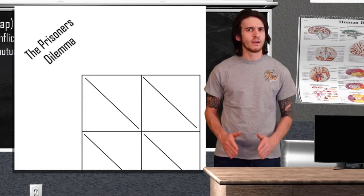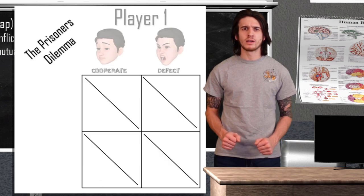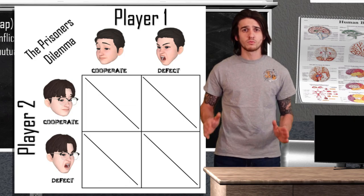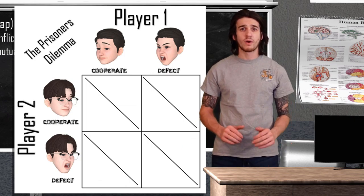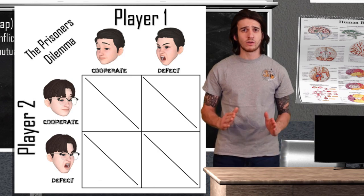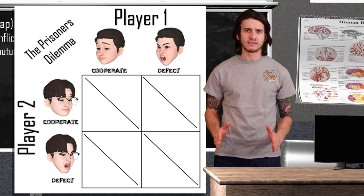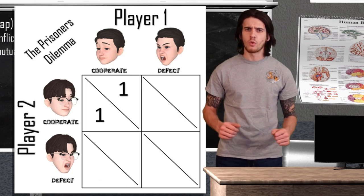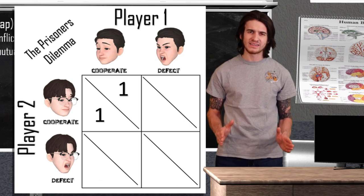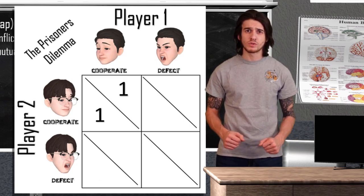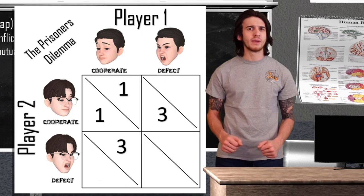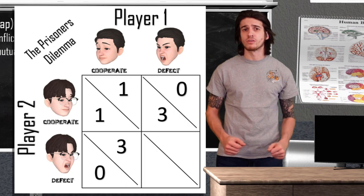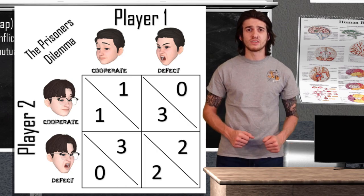In our scenario we have two main characters: criminal one, who we will call Michael, and criminal two, who we will call Dwight. Both Michael and Dwight have two choices, leaving us with the social trap game matrix you see before you. If Michael and Dwight both cooperate and remain silent, they will be given the lesser charge and both only serve one year in jail. If one cooperates while the other defects, the one who stayed silent serves three years while the one who defected goes free. If both defect and betray one another, they both serve two years in jail.